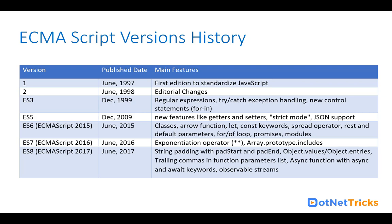Then we have ES7, or ECMAScript 2016, released in June 2016. With ES7, we have the exponential operator like double asterisk, and array.prototype.includes. These are the main features introduced in ES7, though there are other changes as well.